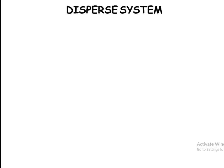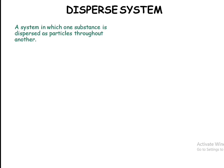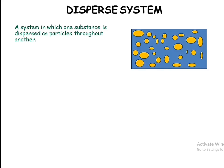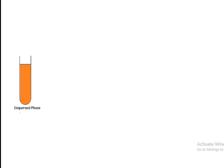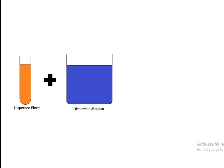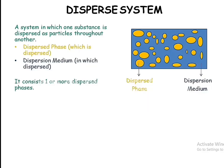Today we will discuss dispersed systems. A dispersed system is one in which one substance is dispersed as particles throughout another. It consists of two phases: the dispersed phase and the dispersion medium. The substance which is dispersed is the dispersed phase, and the medium in which it is dispersed is the dispersion medium. This system contains at least one dispersed phase.